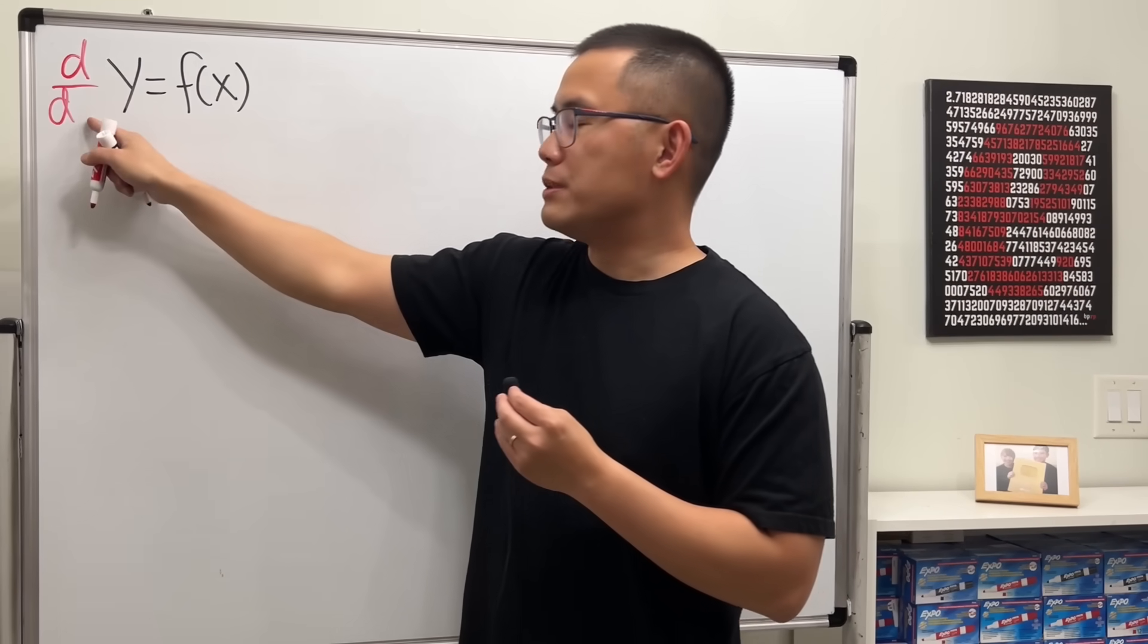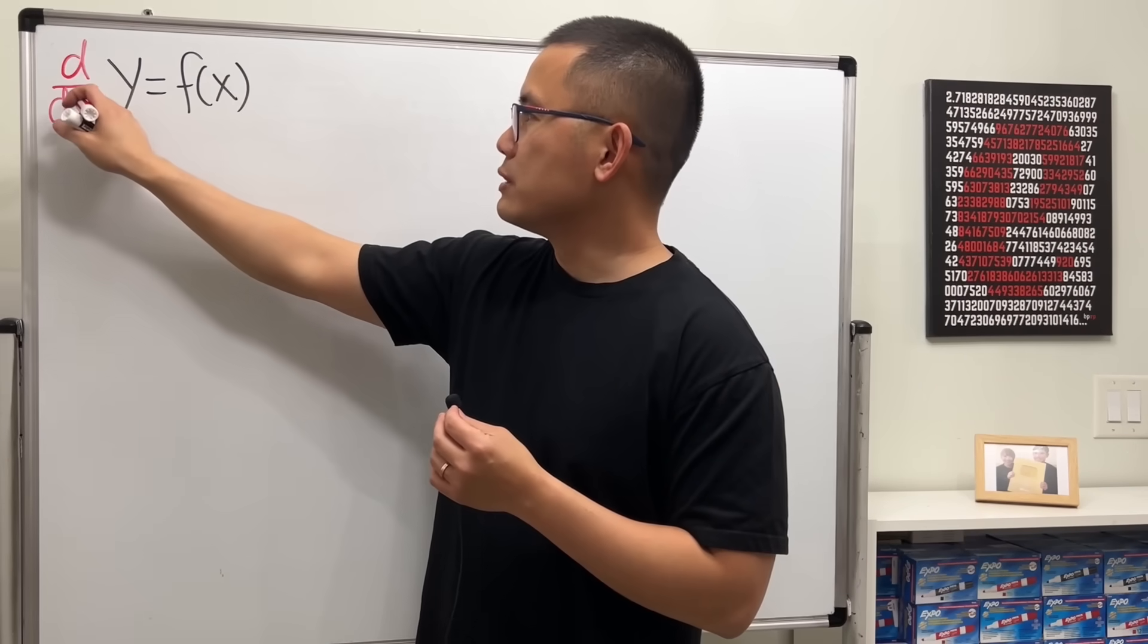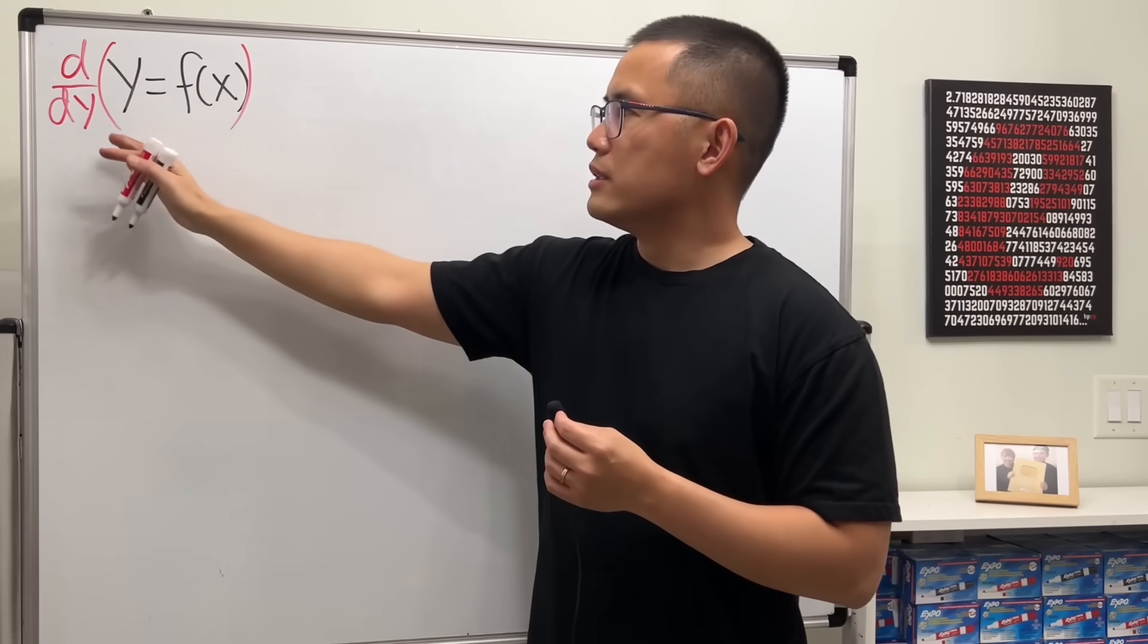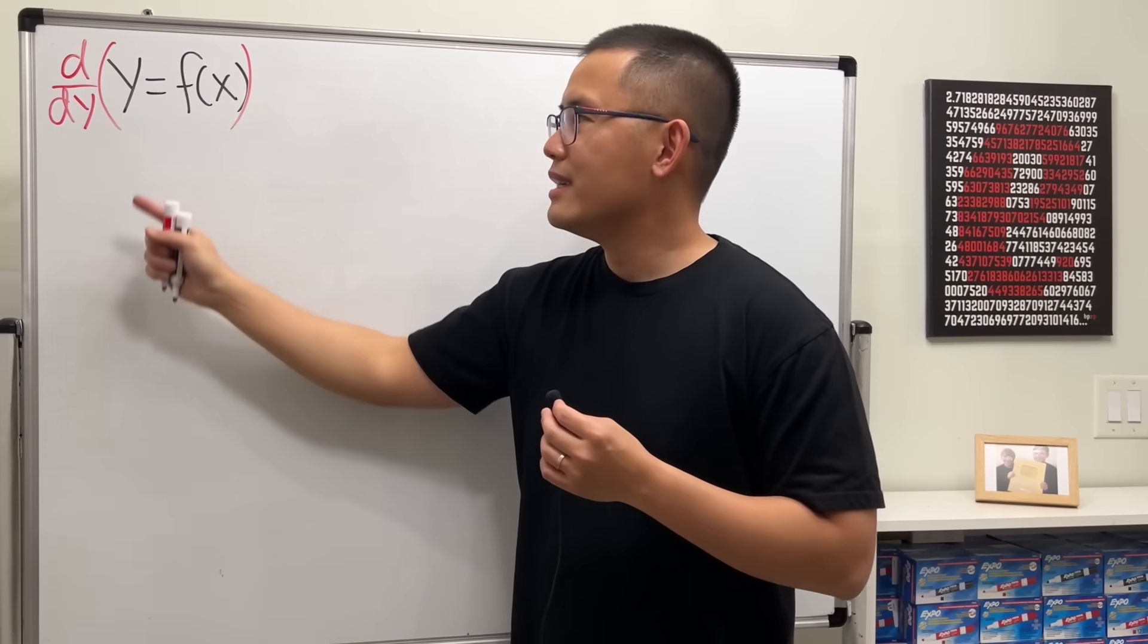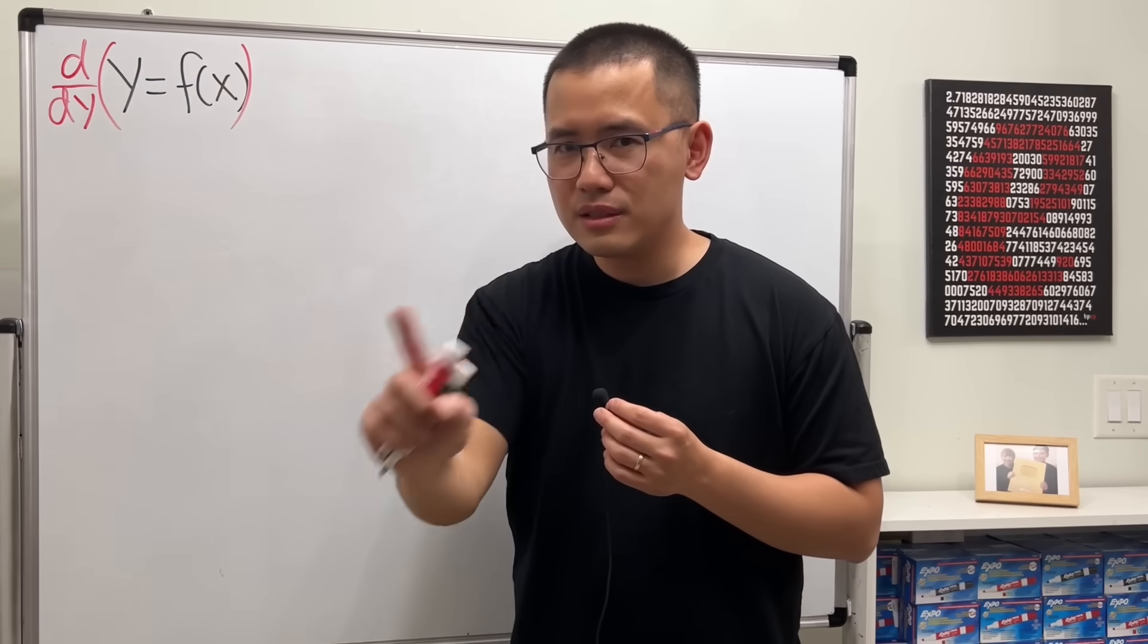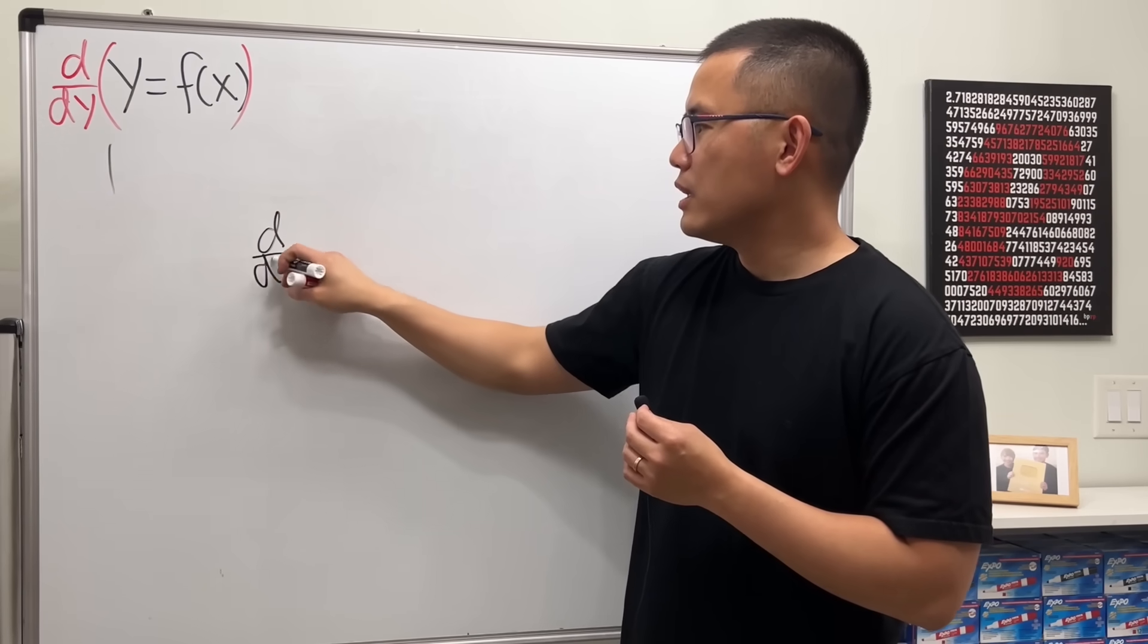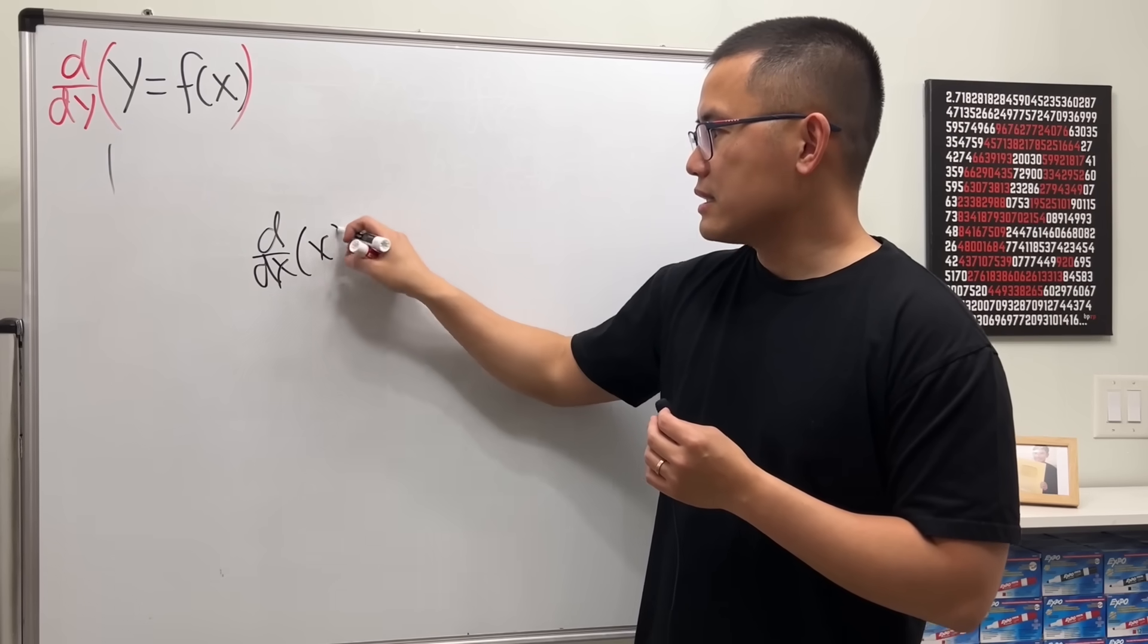So in this case, how do we do it? On the left-hand side, the derivative of y with respect to y is one. It's just that when you differentiate with respect to x of x, this right here is equal to one.